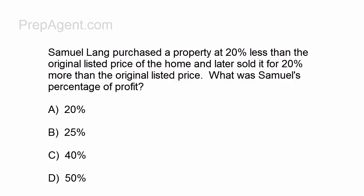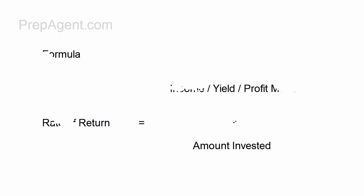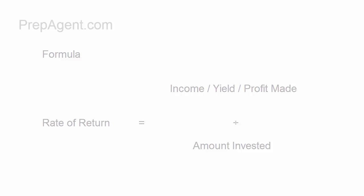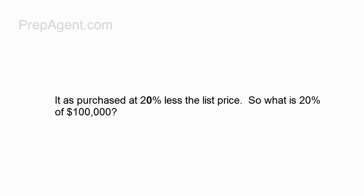What was Samuel's percentage of profit? Here's what we need to do. The formula is: profit made divided by the amount invested gives us the rate of return. Since we don't have a list price for the property, let's use $100,000, and then we'll find the purchase price.